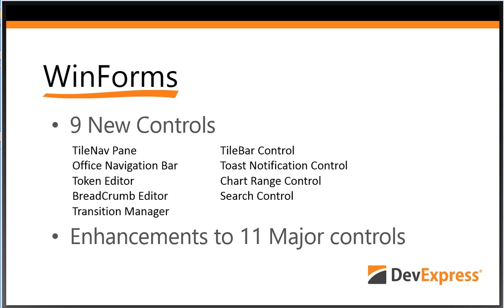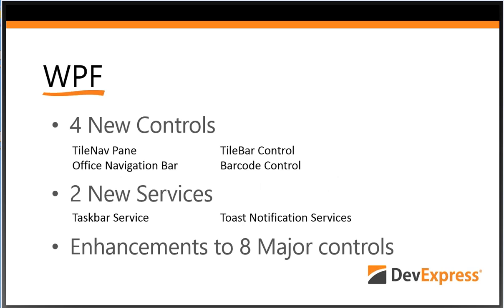On top of the new controls, we've added some really cool new features and enhancements to 11 of the major WinForms controls. For WPF, we've also seen the new navigation controls added — TileNav, TileBar, and Office Navigation — as well as a barcode control to allow you to add 1D and 2D barcodes to your WPF applications. There are new services including the Taskbar service and Toast Notification service, plus enhancements to eight major controls.